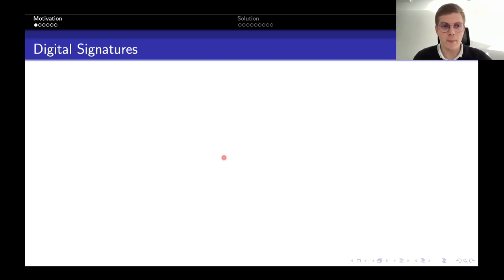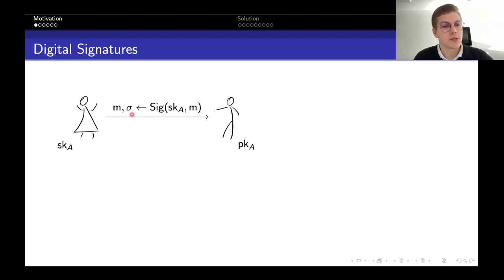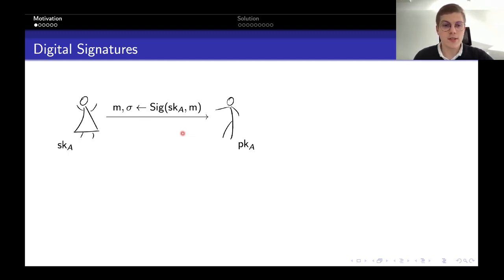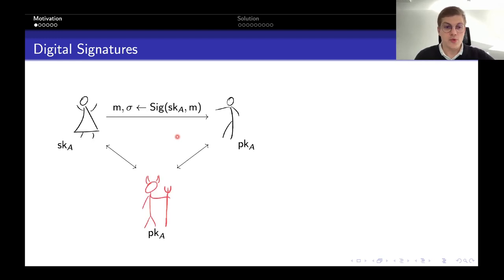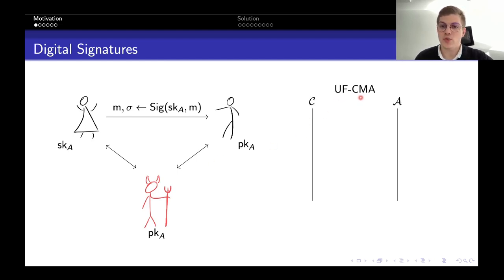In a digital signature scheme, we have a user Alice that sends a message M to user Bob. Bob knows the public key of Alice, so she can append a digital signature Sigma to that message that Bob can verify using the public key. This ensures authenticity and integrity of the message. Typically we think of a scenario where an adversary also knows the public key of Alice, can interact with Alice, learn some signatures, and then try to forge signatures on arbitrary messages for Bob. We model this using a cryptographic security game of unforgeability under chosen message attacks.